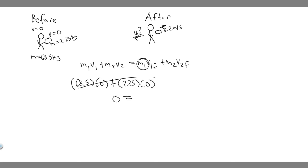Equals M1. We know M1 is just the mass of our astronaut, 68.5, times V1 final, which we don't know. That's what we're solving for.